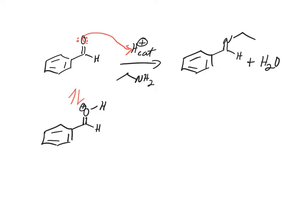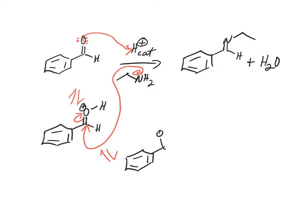The next step is going to be addition. We're going to form a tetrahedral intermediate. The plus charge goes on the nitrogen — balance your charges.